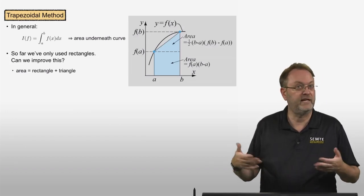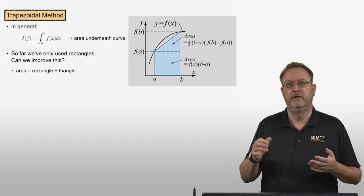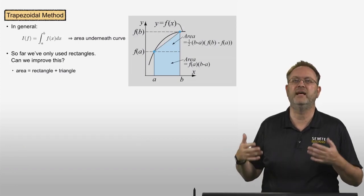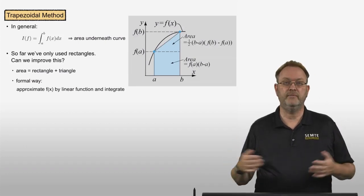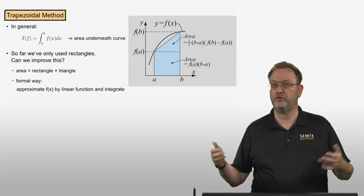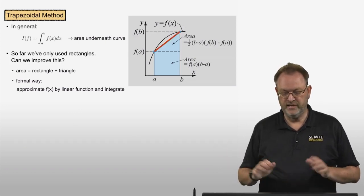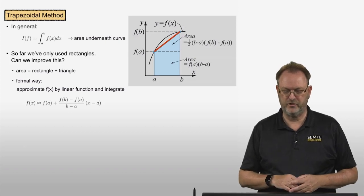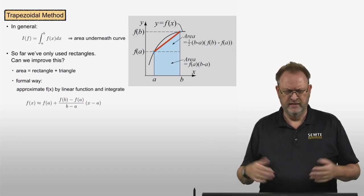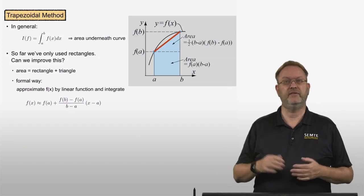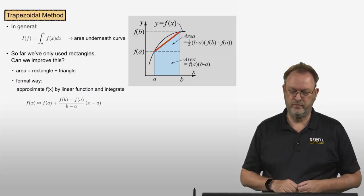The formal approach is to approximate f(x) by a first-order (linear) polynomial and then analytically integrate it following the Newton-Cotes idea. We write the linear function as f(a) plus (f(b)-f(a))/(b-a) times (x-a) — that's the standard line equation using the slope and the left endpoint.